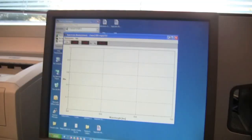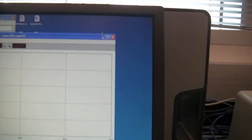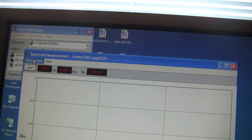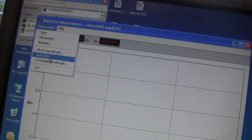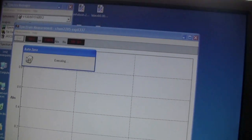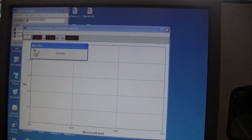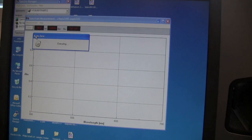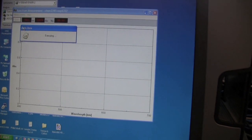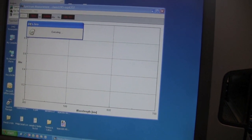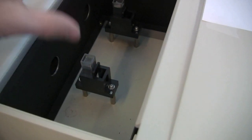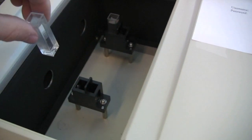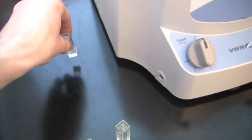Close the lid and go to the spectro management program. Click the management tab and click auto zero. The computer will begin calibrating the spectrophotometer. Once it's calibrated, remove the cuvette with the deionized water closest to you and place this separate from the rest of the cuvettes.